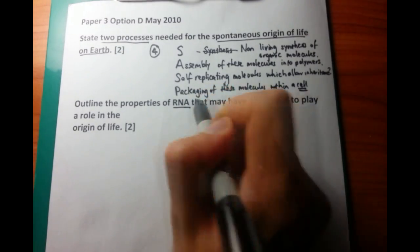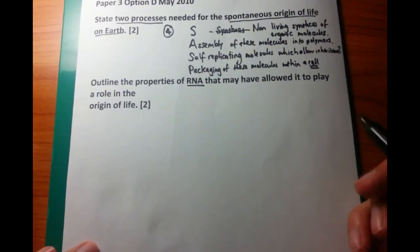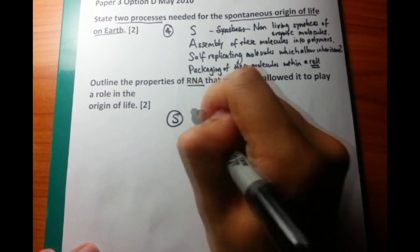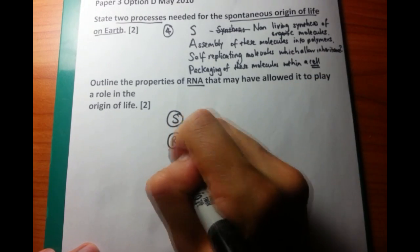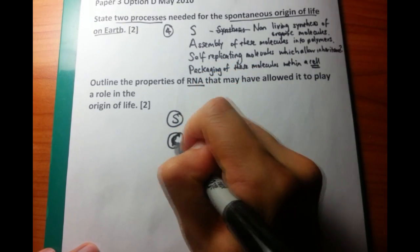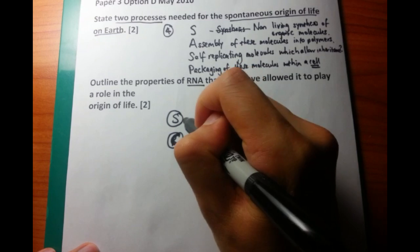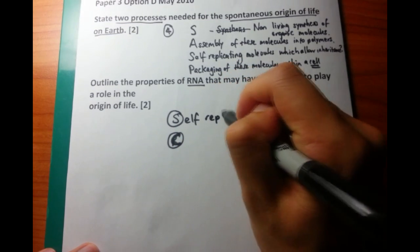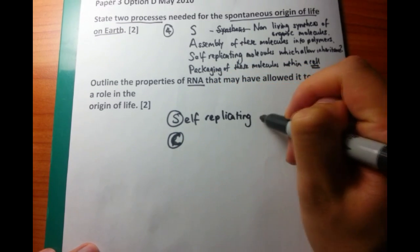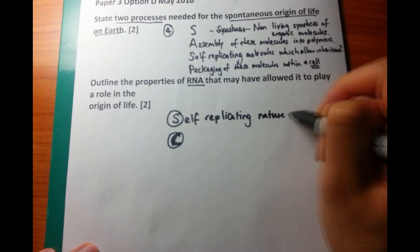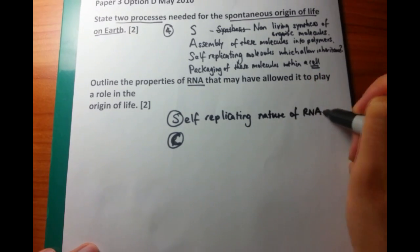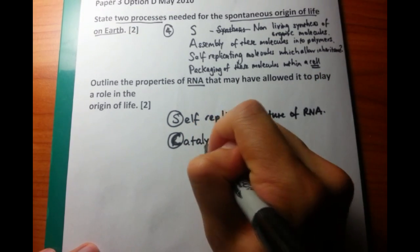Now the next point is, outline the properties of RNA, so ribonucleic acid that may have allowed it to play a role in the origin of life. And there are two main points here for this particular question. So firstly, S, self-replicating nature of RNA. Secondly, we're going to talk about the catalytic nature of RNA.